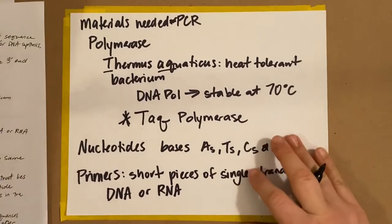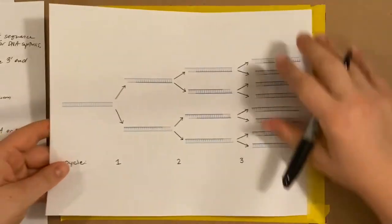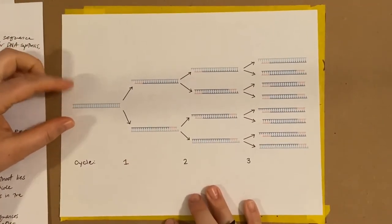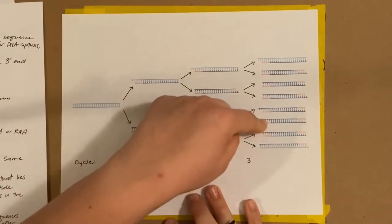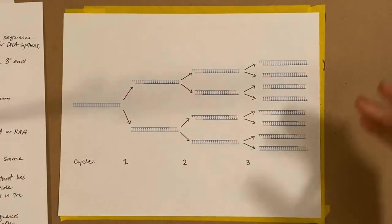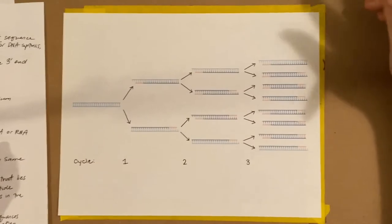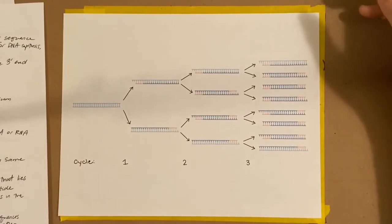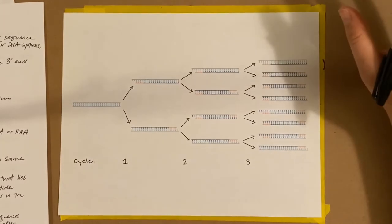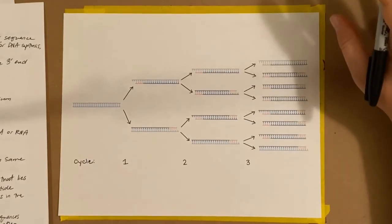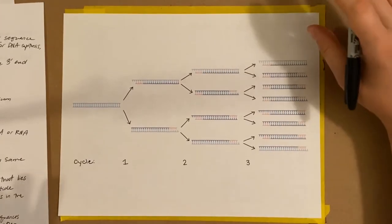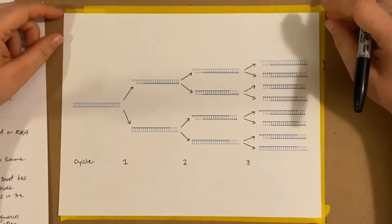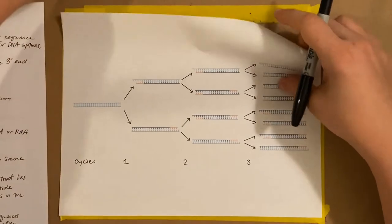That's how the process works. You start with a single piece of DNA and can do multiple cycles. If you do this for 20 to 30 cycles, you'll end up with an enormous amount of DNA that can then be used for testing. The way we use this for DNA fingerprinting requires understanding which sequences of DNA we're looking at during DNA profiling.